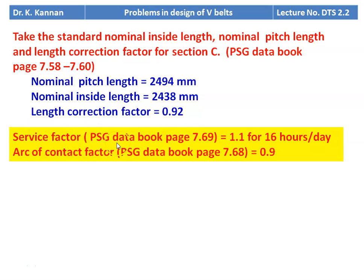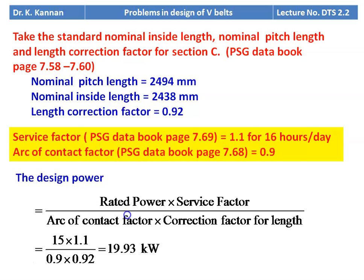The service factor from page 7.69 is 1.1 for 16 hours per day, as the number of service hours is not given in the problem. The arc of contact factor from page 7.68 is 0.9 for 141.8 degrees. Design power = rated power × service factor / (arc of contact factor × length correction factor) = 15 × 1.1 / (0.9 × 0.92) = 19.93 kW.